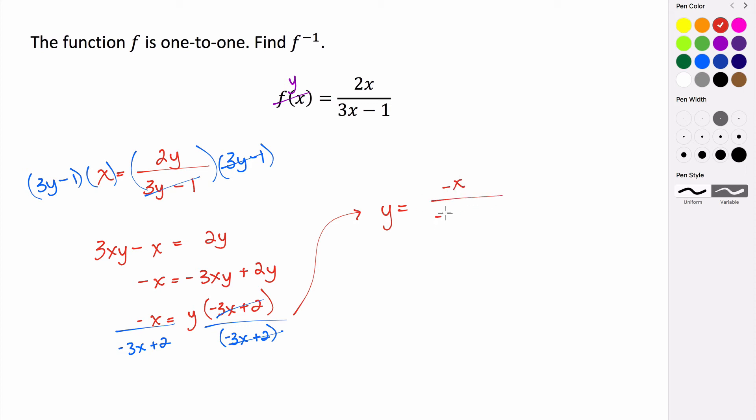So this is my inverse. f inverse of x is equal to negative x divided by negative 3x plus 2. So that's the inverse of this function f.